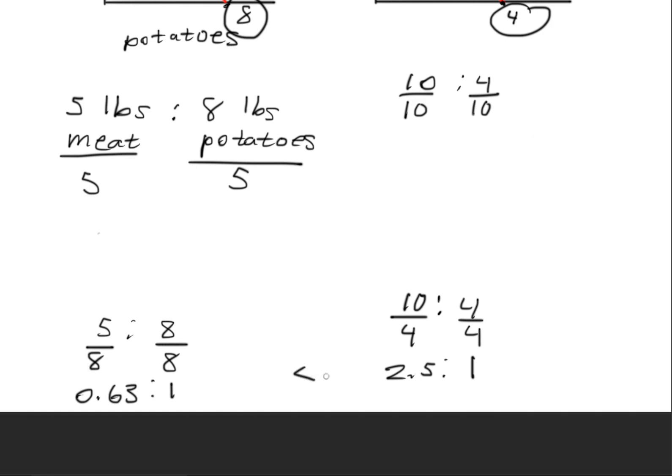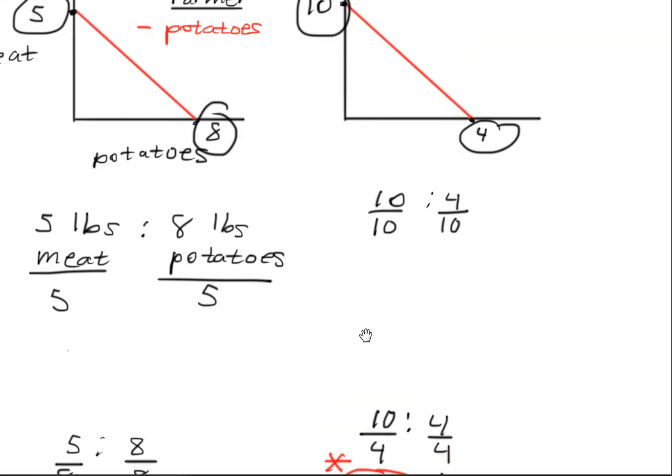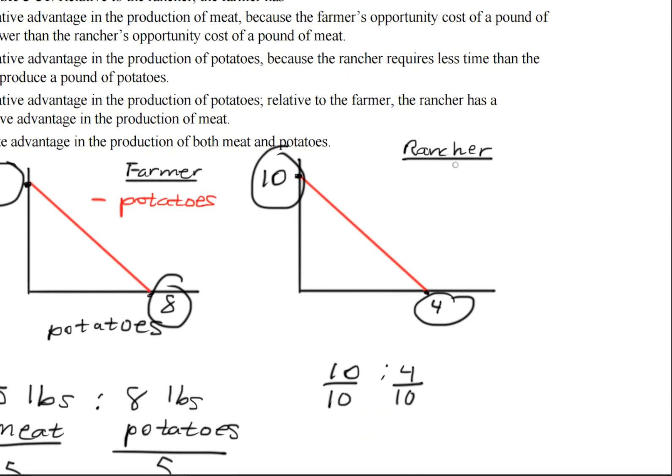So 2.5 is greater than 0.63. So this number belongs to the rancher. So the rancher has a comparative advantage for producing meat.